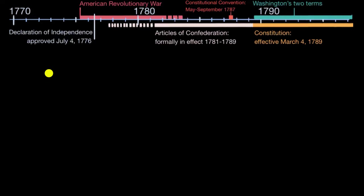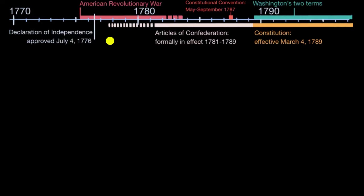As we talked about in other videos, shortly after the Declaration of Independence in July of 1776, the representatives from what were colonies, but now self-declared states, had to think about how to organize themselves. And so they start drafting the Articles of Confederation, which go into effect in 1781.